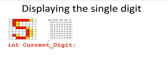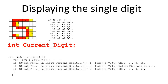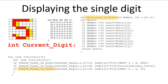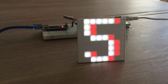The variable current_digit stores the digit that is currently being displayed on the matrix. The code to display the digit looks like this. The custom function checkPixelInDigit takes the current digit value, looks for the corresponding digit array, and within that array finds the entry with i and j coordinates. Depending on whether the value read is 0, 1, or 2, we display the pixel in background, digit, or shading color.